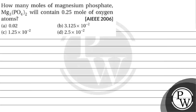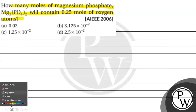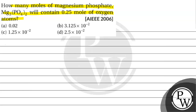Hello guys, let's read this question. The question says: how many moles of magnesium phosphate will contain 0.25 moles of oxygen atoms? Option A is 0.02. Option B is 3.125 × 10⁻². Option C is 1.25 × 10⁻². Option D is 2.5 × 10⁻². The key concept for this question is: